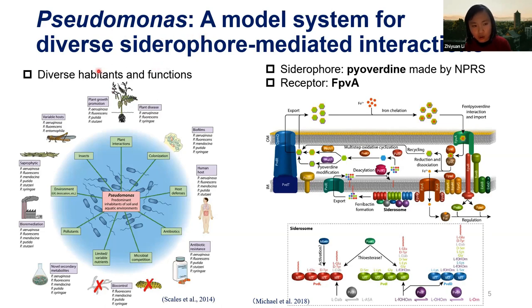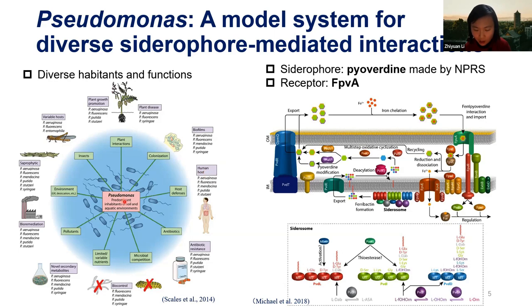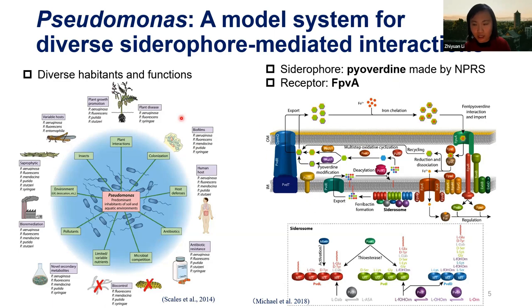Pseudomonas exists in a wide range of habitats, providing sufficient diversity for us to extract rules. For example, if someone gets a nasty lung infection, it is probably due to one of them. Almost each type of microbe has its own characteristic siderophores, and the siderophore made by Pseudomonas is termed pyoverdine.